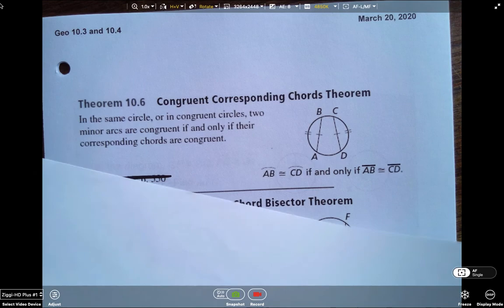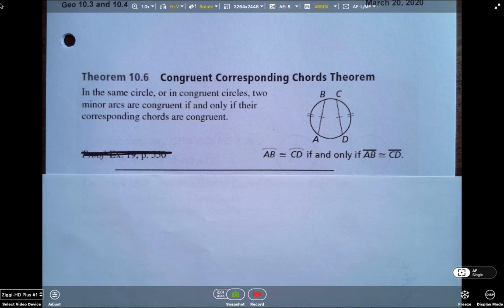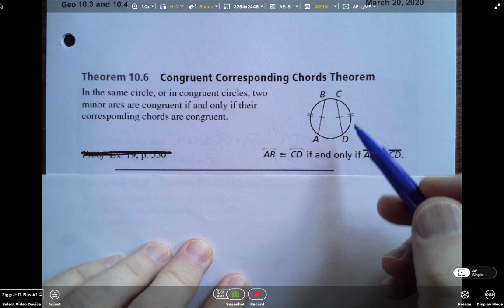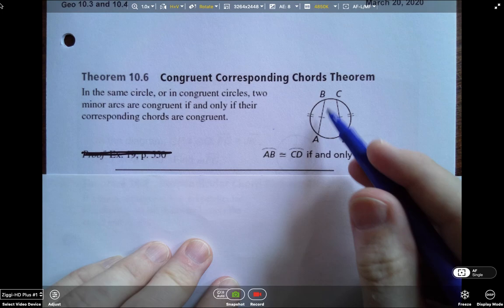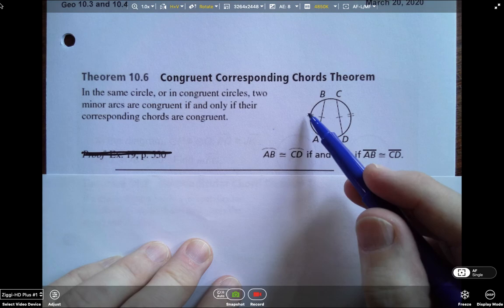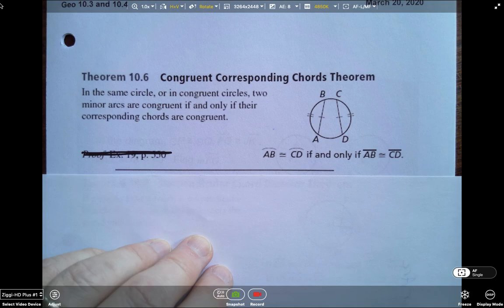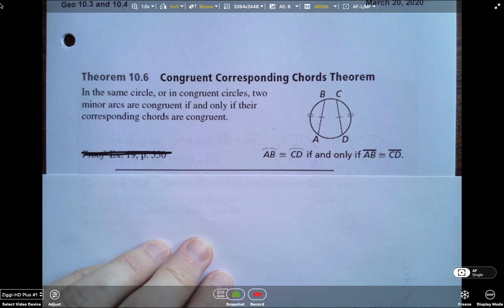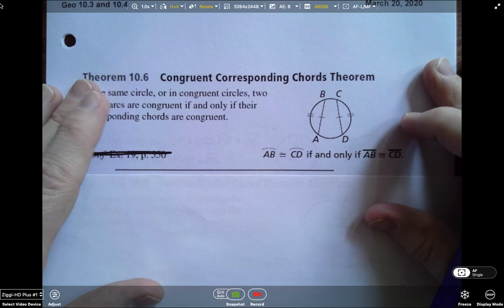All right, so we've got a few note cards. Note card number one, the congruent corresponding chords theorem. Take a second to write this down. Pause it if you need to. Notice it is a biconditional if and only if. So we can say these two arcs, arc AB and arc CD are congruent if we know that these two chords are congruent. Or we could go backwards and say if we know that these two arcs are congruent then these chords have to be congruent. Also notice it said in the same circle or in congruent circles.